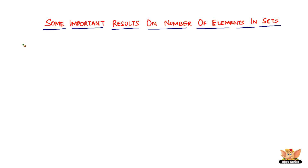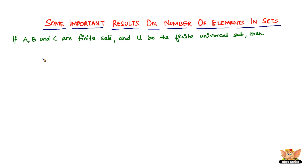In this video we're going to look into some of the important results on the number of elements in sets. Before we begin listing the results, we have a condition to write out: if A, B, and C are finite sets — remember, finite sets — and U is the finite universal set, then here start the results.